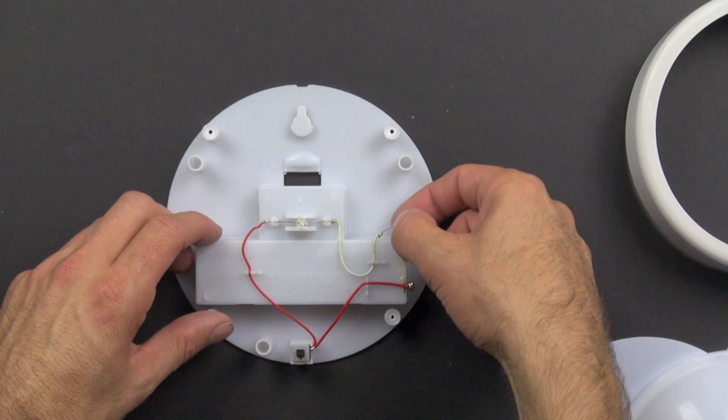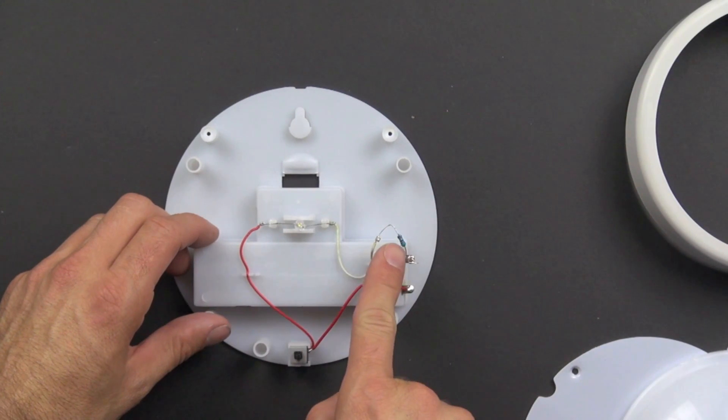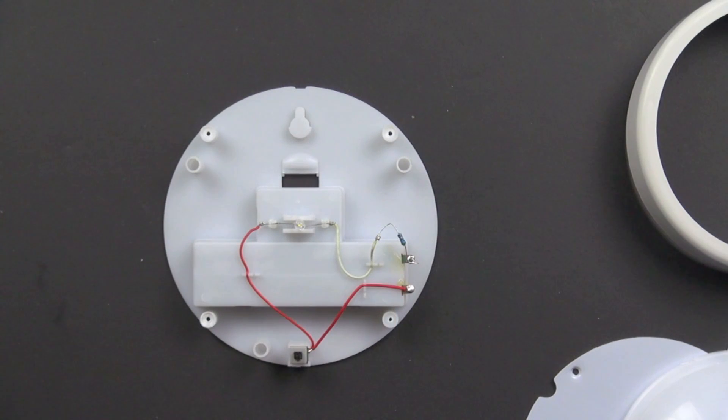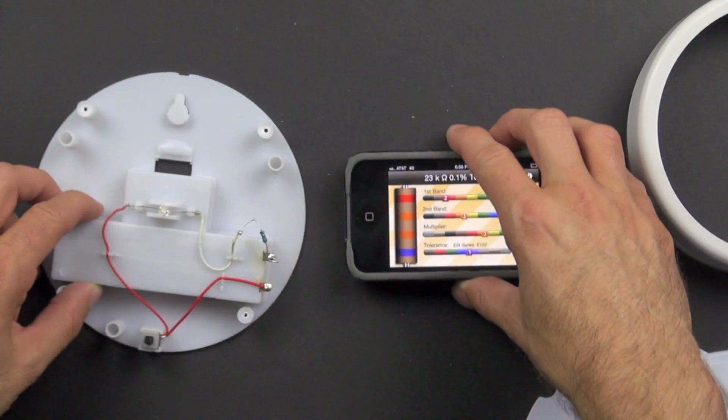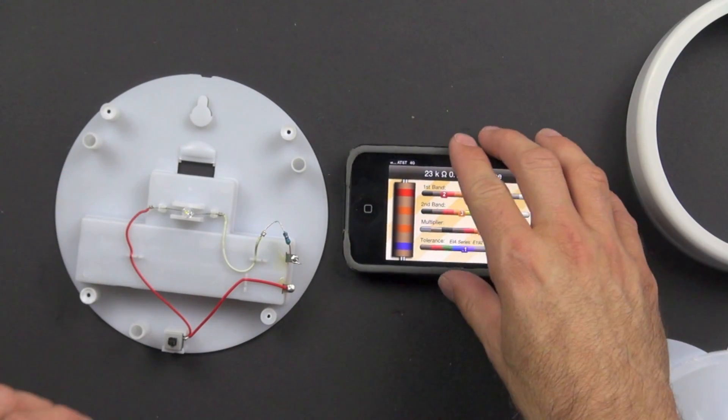So the other thing is in order to operate an LED, you need to have one of these guys and that's called a resistor. Now resistors exist basically to keep too much current from flowing to the LED and causing it to burn out before it's supposed to burn out. So one of the things I have been able to do is to use my iPhone to find out what the resistor code is. So it's really a handy way to do it.